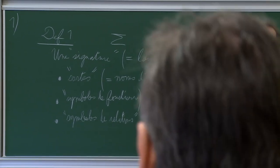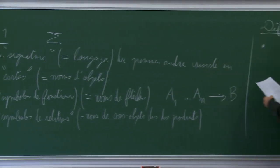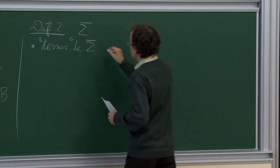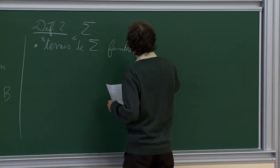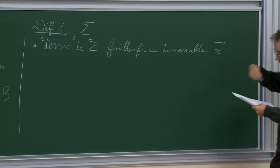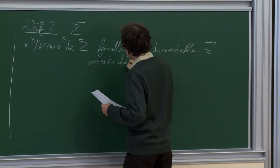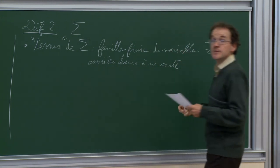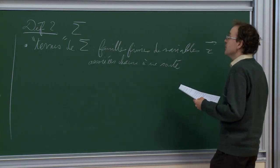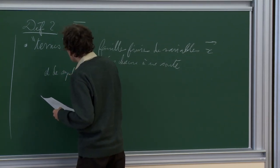So we are in a given signature, and first there are what we call the terms of the signature sigma. These are finite families of variables — noted with an arrow on top to indicate there are several — each variable being associated with a sort. Of course, we can have several variables associated with the same sort.